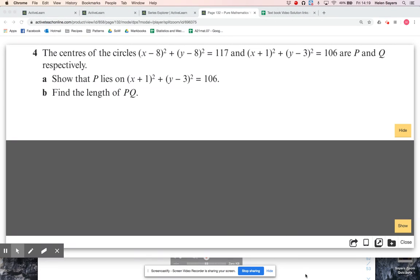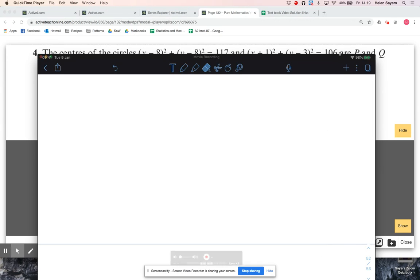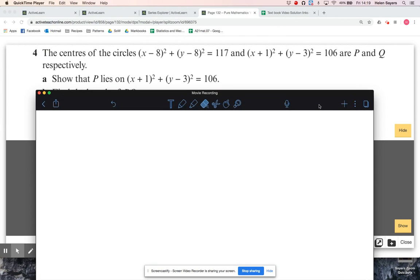Okay, so question four, looking at part a. The first thing is, let's state what P is. They told me that P is the center of this circle, so that means P is (8, 8), the center of that circle. I therefore need to just show that P lies on this circle.